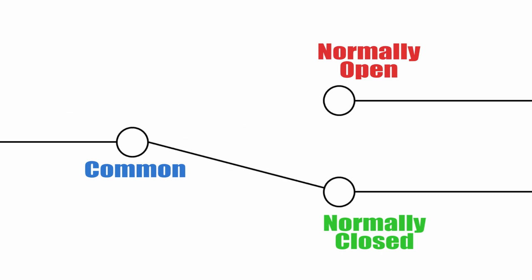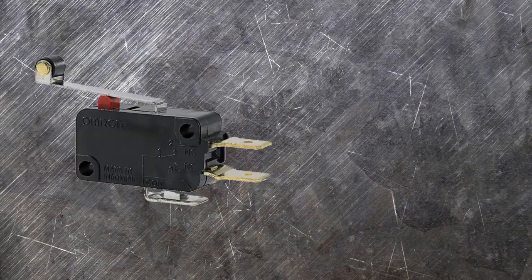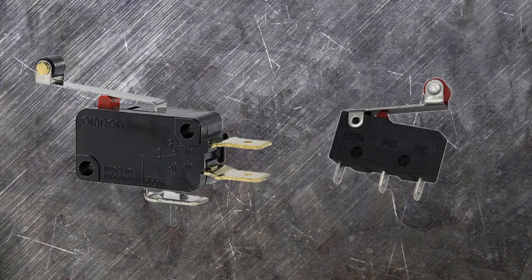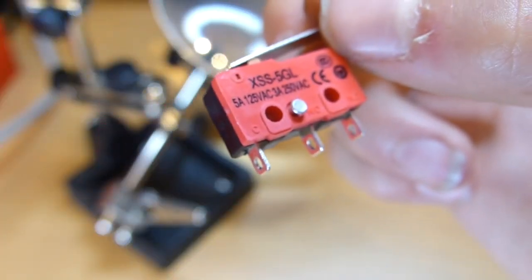If we take this over to real life, there are two types of micro-switches that you will usually encounter, miniature and sub-miniature. There are other types, but the process is the same regardless. If you look closely just above the soldering tabs, you will see that there are some letters.